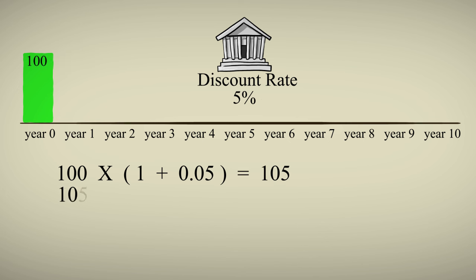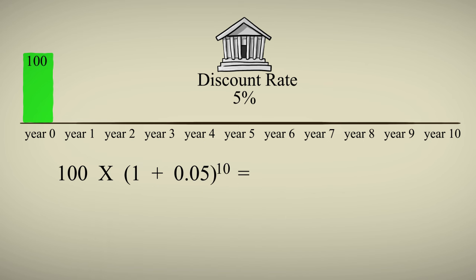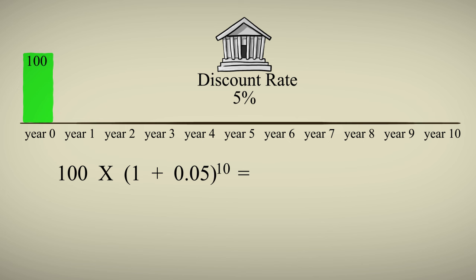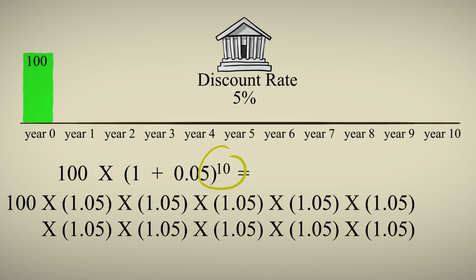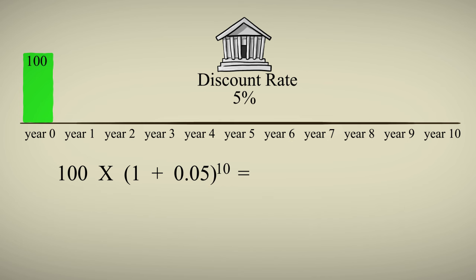Then we take that $105 and multiply it by 1.05 again for the next year. Then we do that 8 more times. Or we could have just written it like this. Taking the 1 plus the interest rate to the power of 10 since we're just multiplying it by the interest rate for 10 years. So $100 after 10 years of interest is $162.89. The future value of $100 from today in 10 years is $162.89.